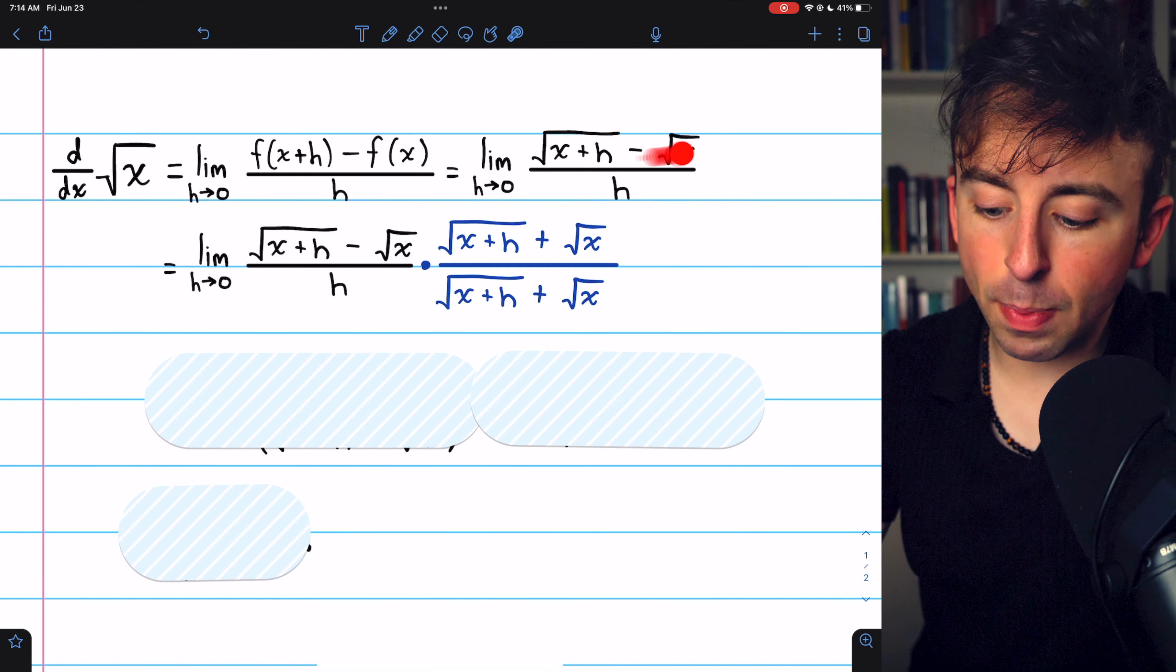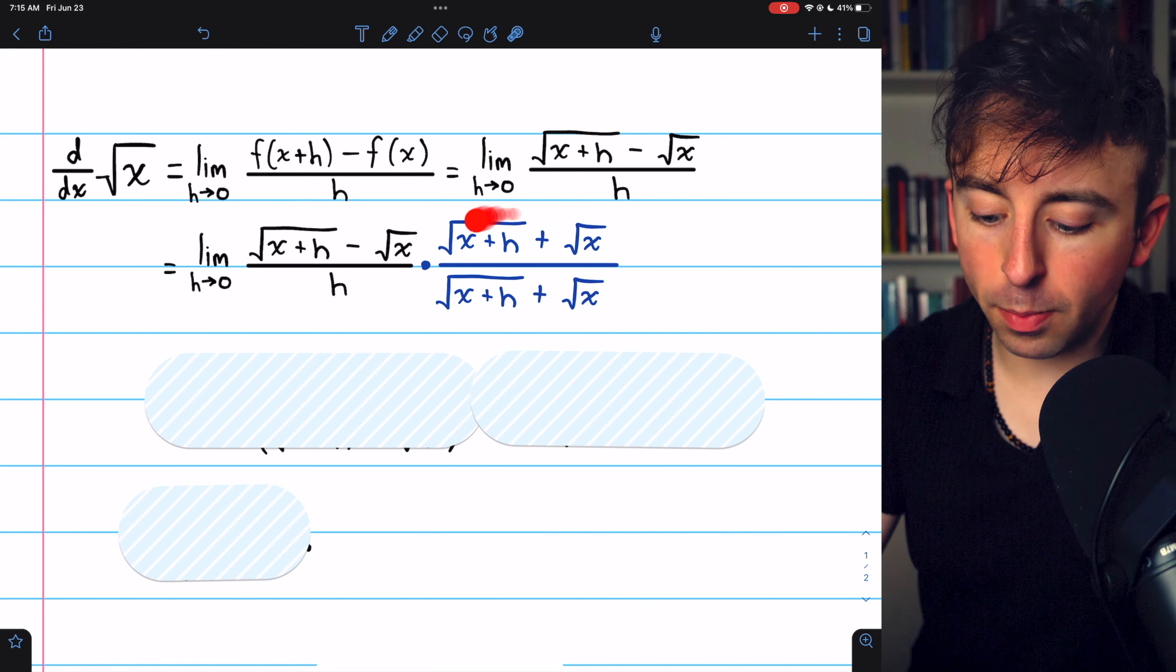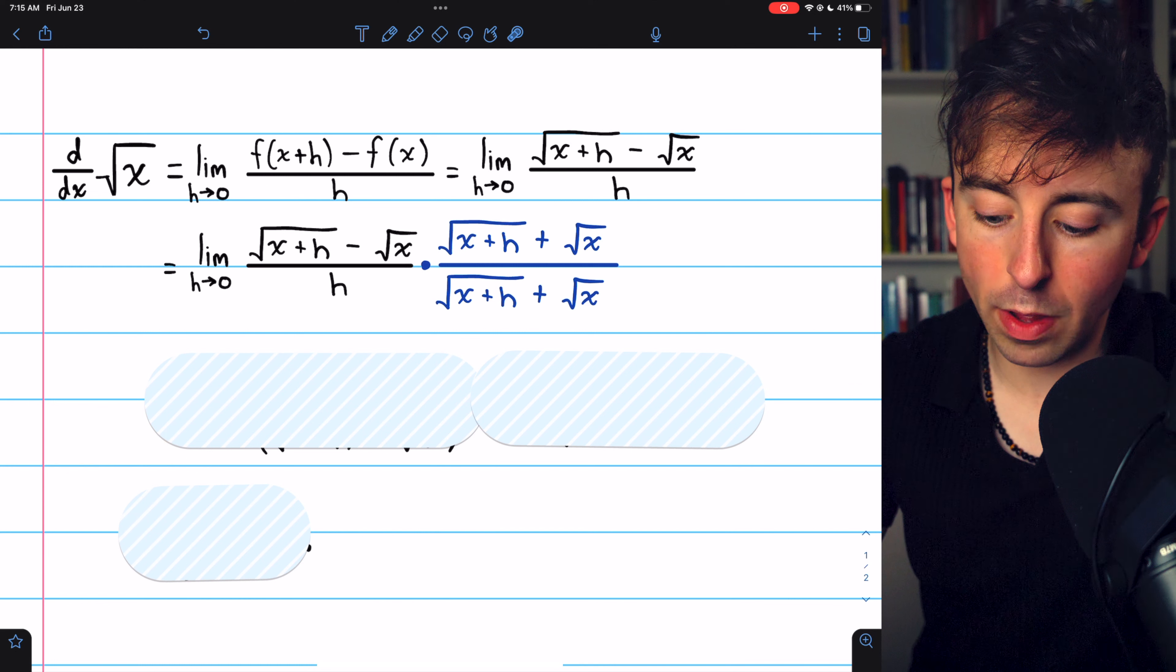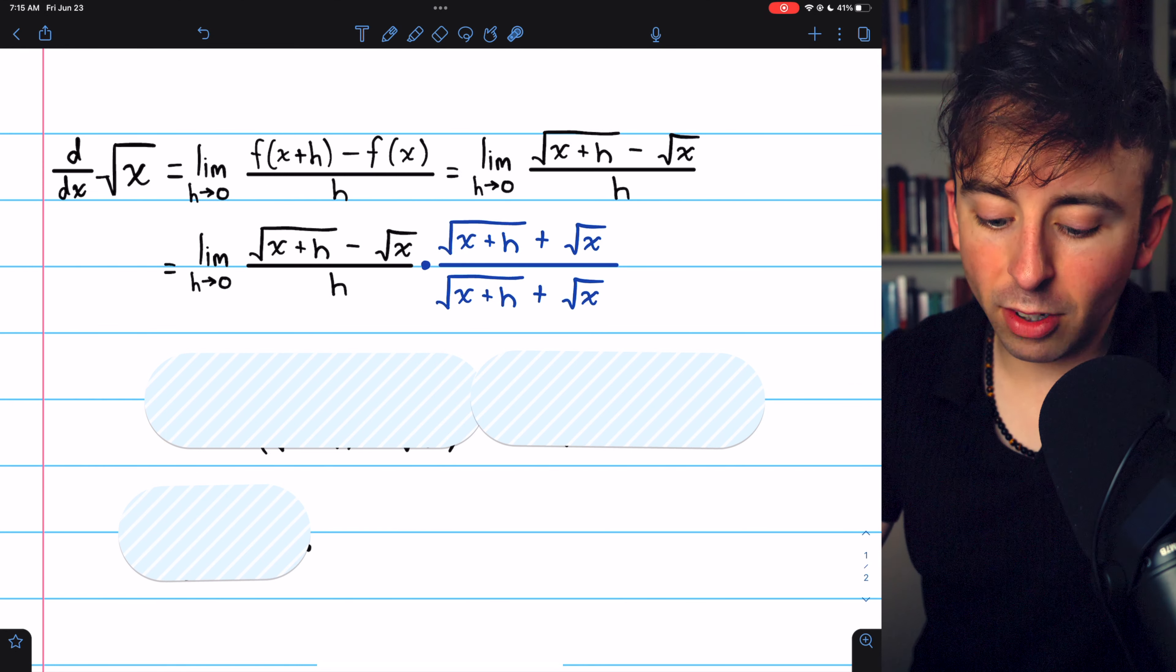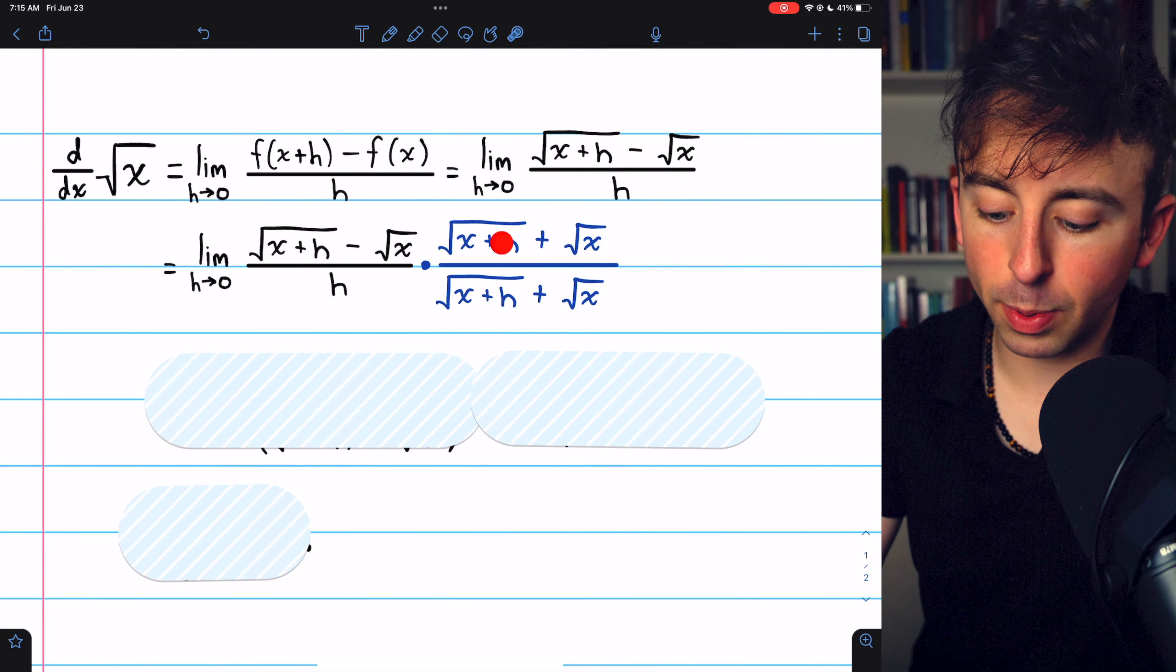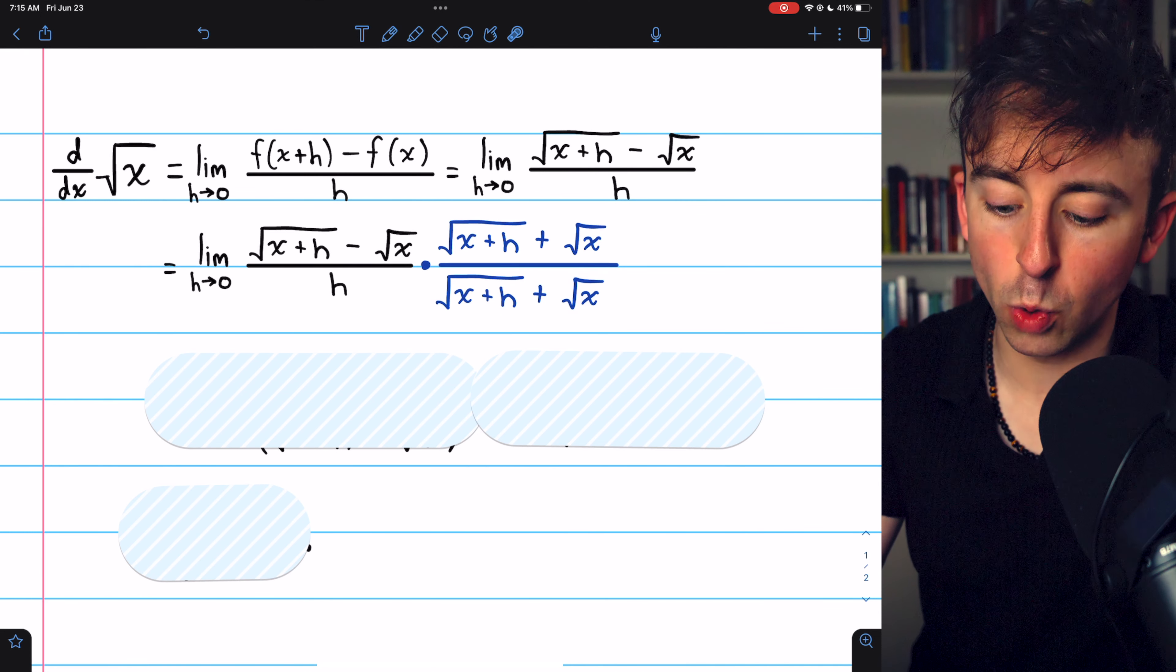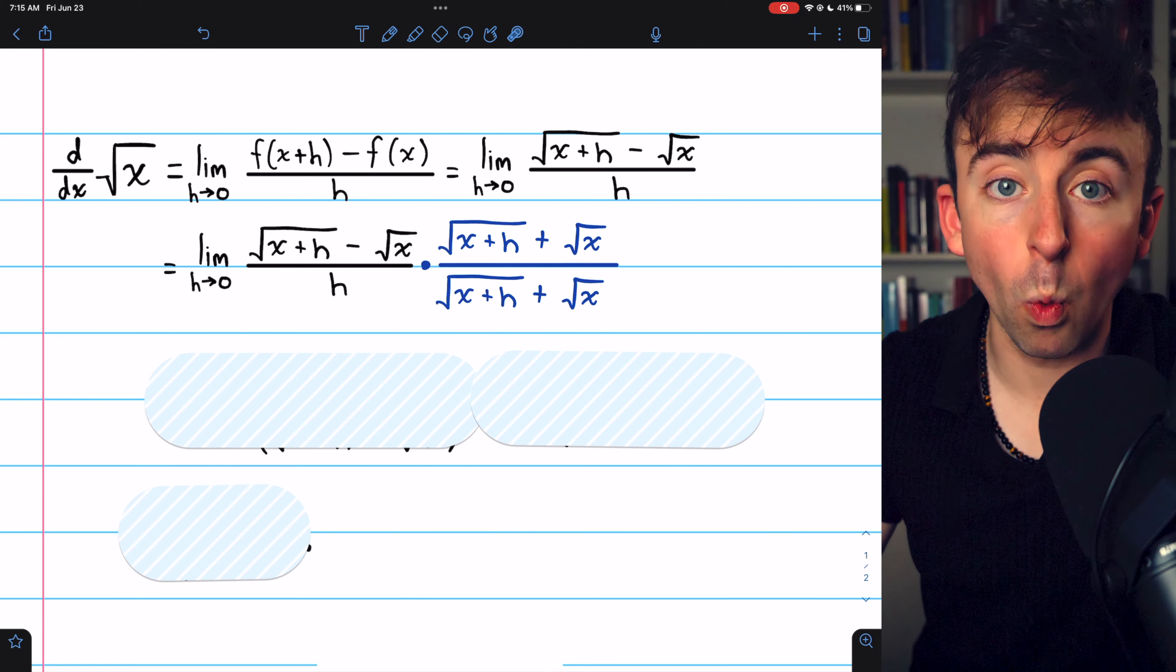In order to get rid of these pesky square roots, we'll multiply by the conjugate of the numerator. The conjugate just means that we flip the sign in the middle. So we multiply by the square root of x plus h plus root x, but we have to put that in the denominator too so that we're multiplying by one.